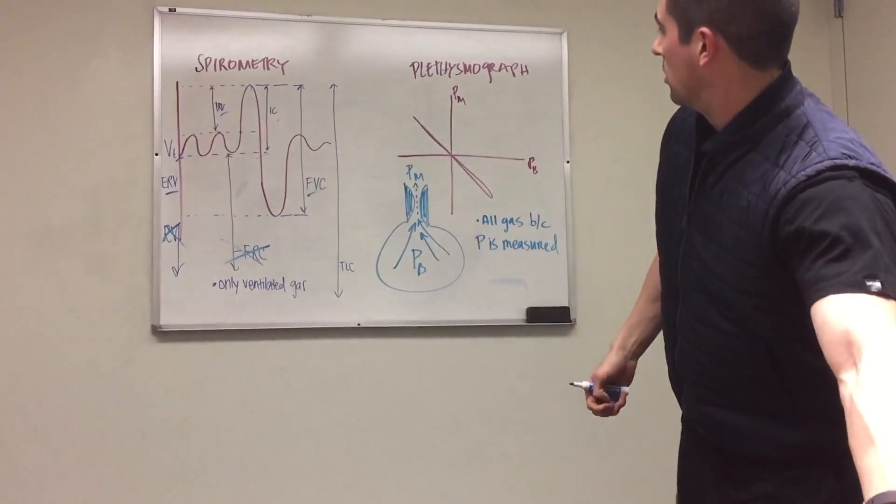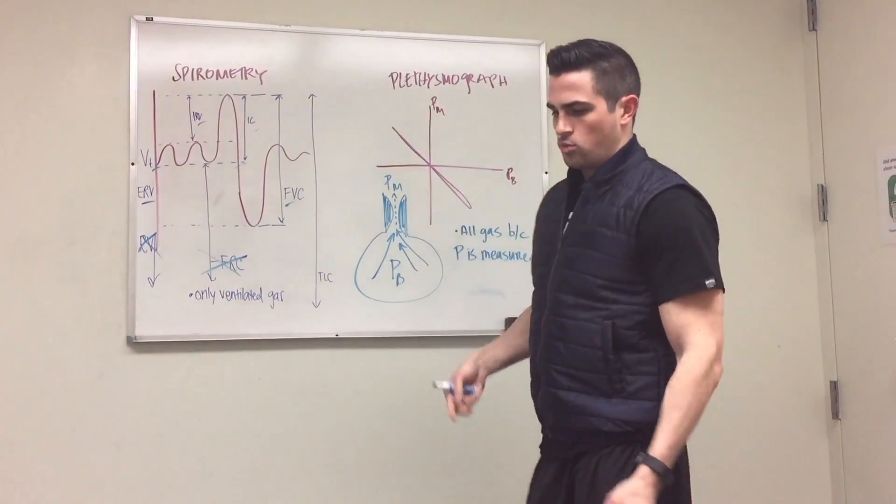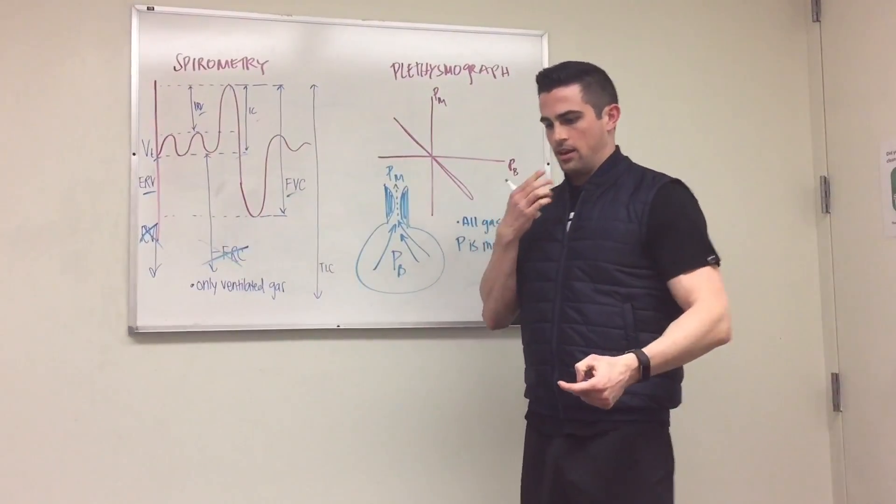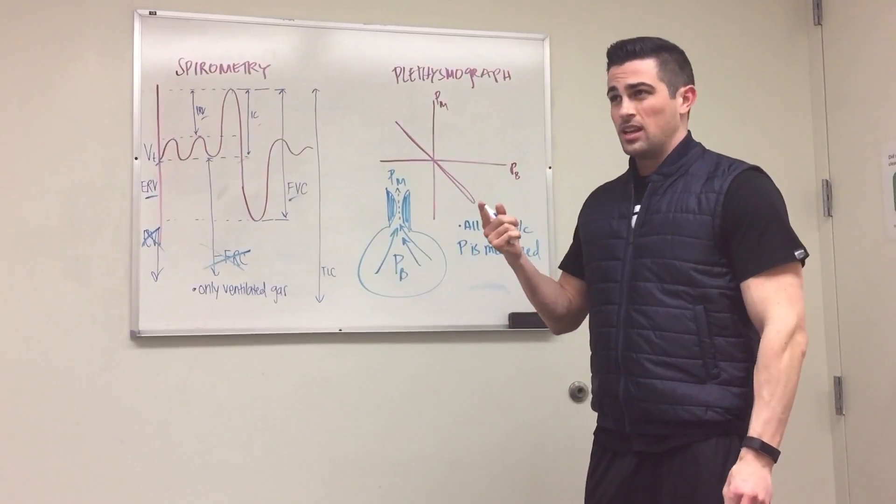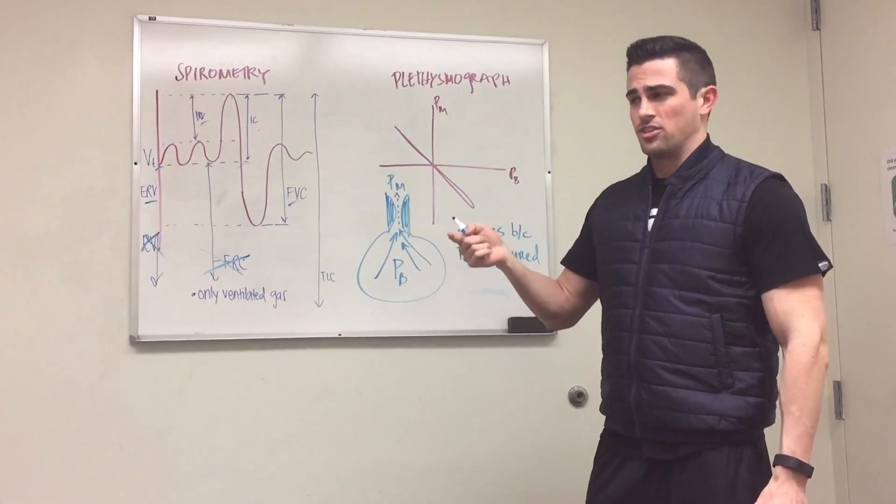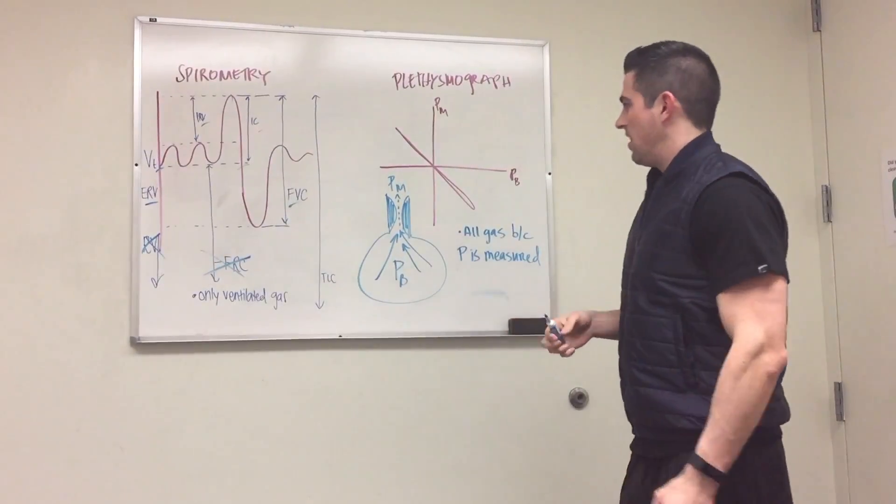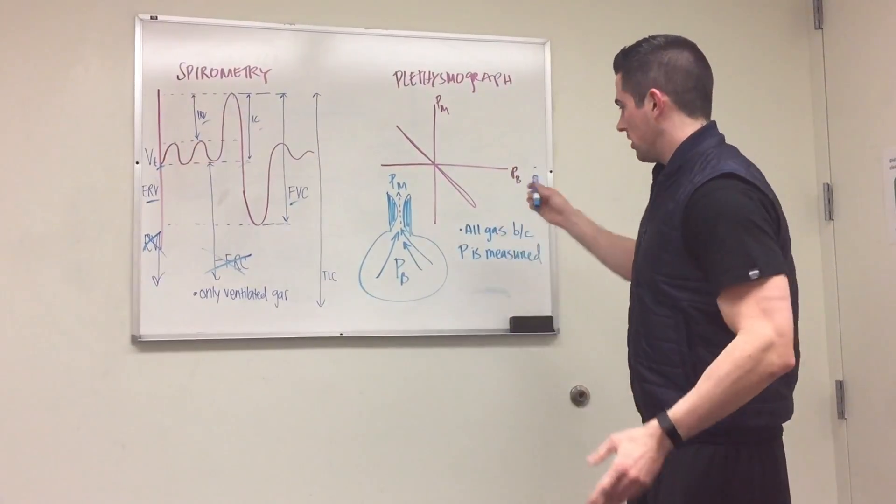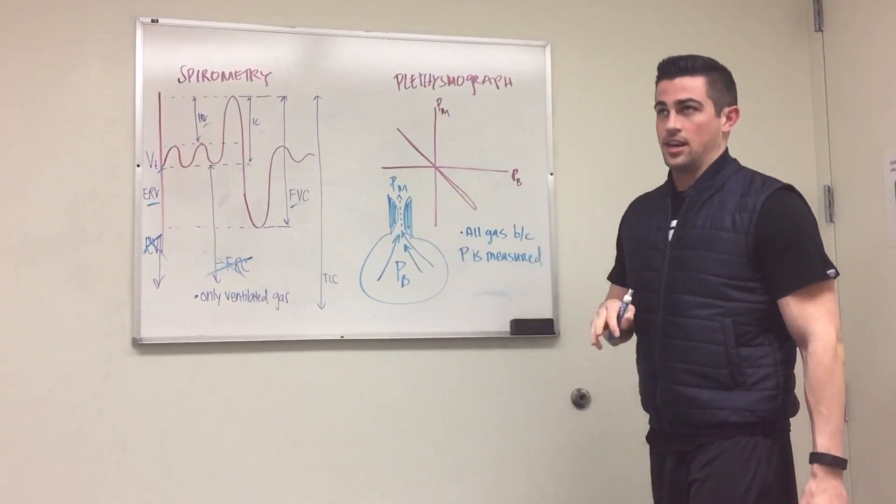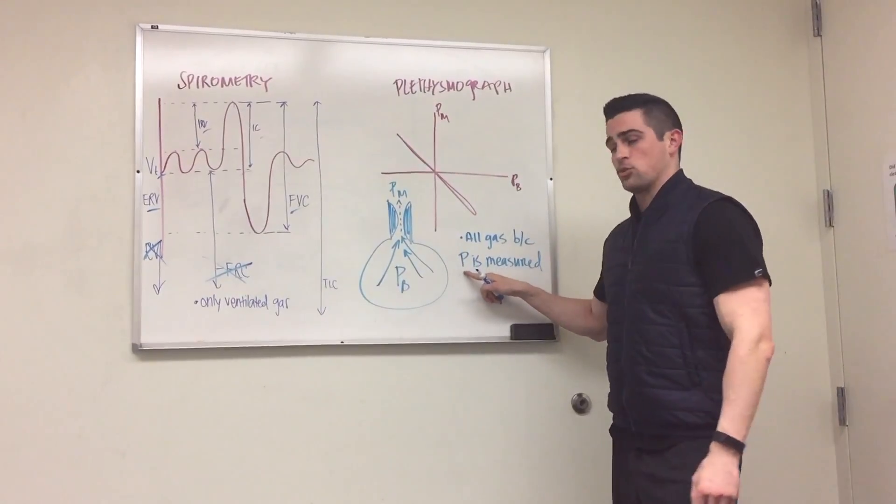Now for plethysmography. This is where you're sitting in a box and they're going to have you breathe in and out of a tube. They calibrate how much pressure is in the box, and then you're going to pant against it. This is always the hard thing. But the point is you're measuring all the gas inside you because you're measuring actual pressure.